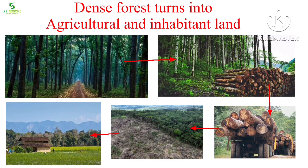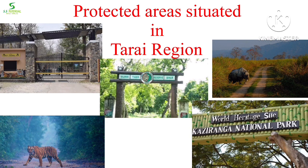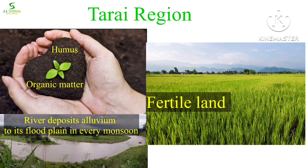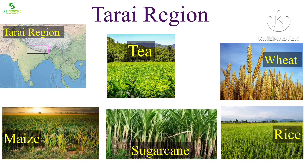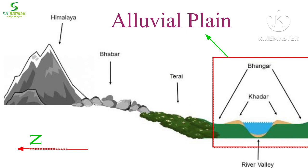The dense forest of Tarai is now decreasing every year as it is being cleared for agriculture and habitation purposes, especially in Punjab, Haryana, Uttarakhand, and Uttar Pradesh. Several protected areas were established in this region; the most popular are Jim Corbett National Park, Valmiki National Park, Kaziranga National Park, and so on. The region is very fertile as it is rich in humus and organic matter, and every year during monsoon, new fertile alluvium is deposited. It is suitable for cultivation of tea, wheat, rice, maize, and sugarcane.